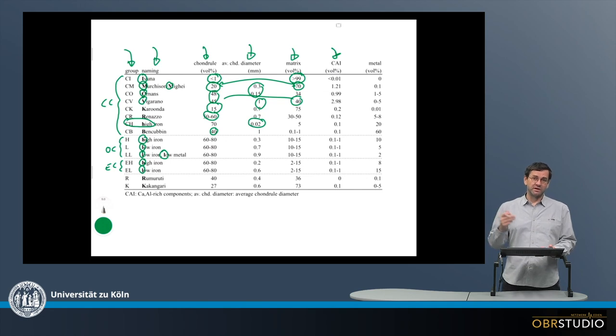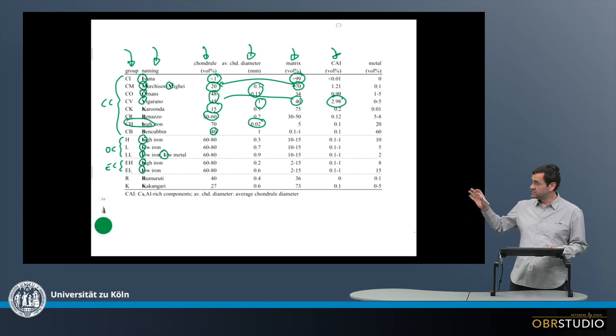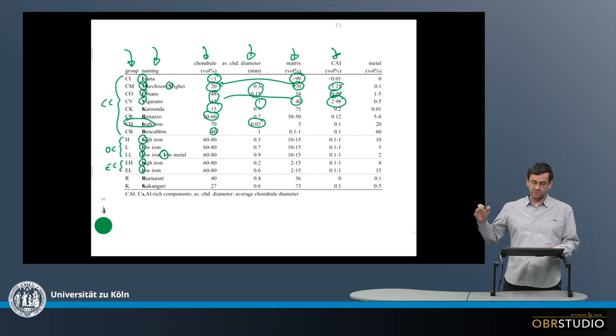Even a little lower, as calcium and aluminum also occurs in chondrules or the matrix in feldspars, for example. So the highest abundances in CV chondrites are about three, maybe a little more, four percent, and in all others it's around one or below. So CAI abundances are always quite low.